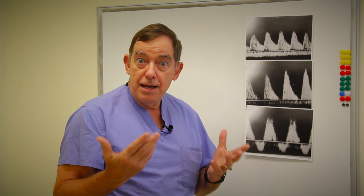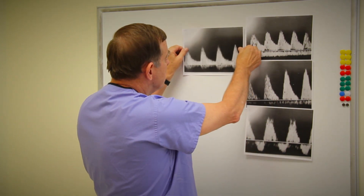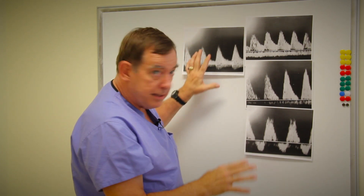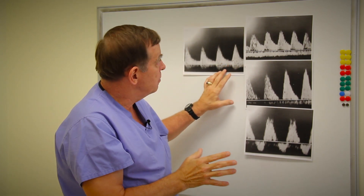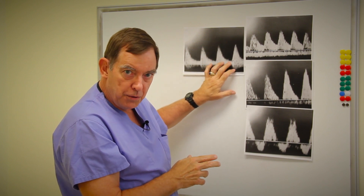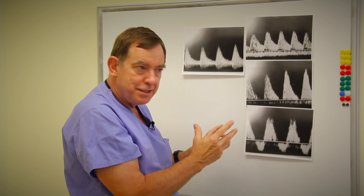Now we talked in the earlier module that the body will preferentially shunt blood to the brain if the baby doesn't get enough oxygen and nutrition. So let's look at the brain vascular waveforms. This is a healthy waveform, and it has much the same elements as the umbilical — a systolic and a diastolic flow — meaning the blood is flowing even when the heart is relaxed.